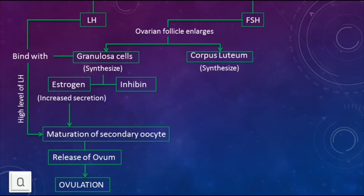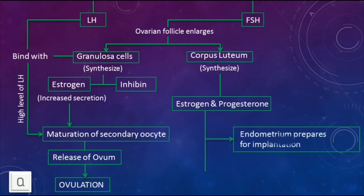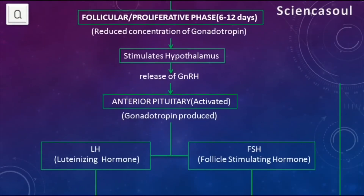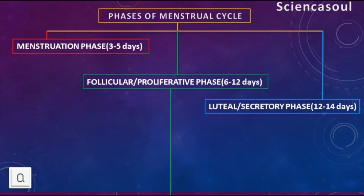The corpus luteum synthesizes estrogen and progesterone. With the help of estrogen and progesterone, the endometrium prepares for implantation and inhibits contraction of the uterus and rupture of the Graafian follicle. In the absence of fertilization, estrogen and progesterone inhibit the release of GnRH.